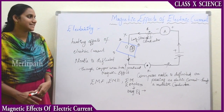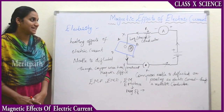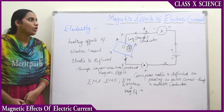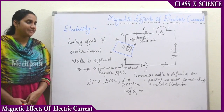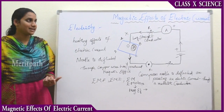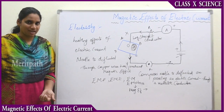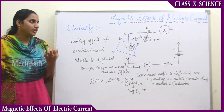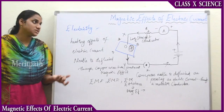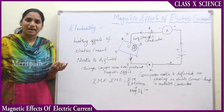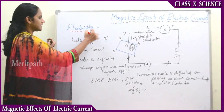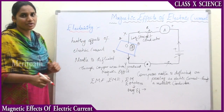Let us discuss the new topic regarding the magnetic effects of electric current. What do you mean by magnetic effects? If you observe the electric current, you have studied in detail in the electricity chapter. Now we will be studying the magnetic effects which are produced because of electrical current passing through the conductor. Let us discuss electricity and the introduction topic of this chapter.